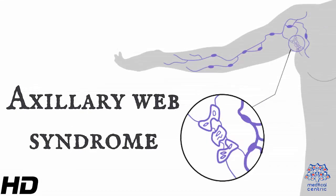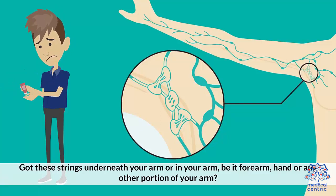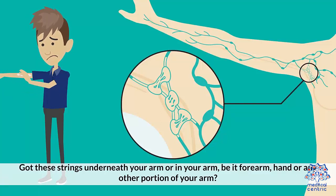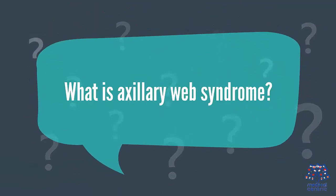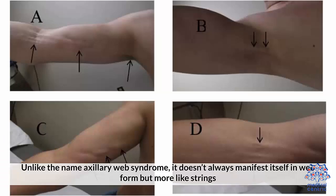Today's topic is Axillary Web Syndrome. Got these strings underneath your arm or in your arm, be it your forearm, hand, or other position of your arm? What is Axillary Web Syndrome? This is a medical condition characterized by cord-like structures under the arms or in the arm itself. This condition is also termed as cording. Unlike the name Axillary Web Syndrome, it doesn't always manifest itself in web form but more like strings.